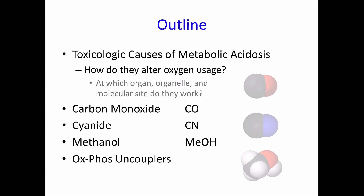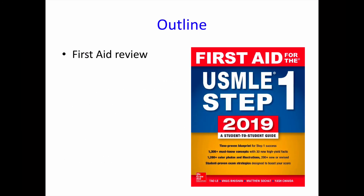As already stated, the poisons we're going to focus on most are carbon monoxide, cyanide, and methanol. But near the end, we'll also cover some uncouplers of oxidative phosphorylation, which is a distinctly different mechanism than inhibition of oxidative phosphorylation. Lastly, we'll be reviewing the relevant material from First Aid on these topics — I'll be using the 2019 edition, so page numbers may differ. I'm hoping to save you some time preparing for USMLE Step 1, since you'll already have learned these topics as well as you'll need to.